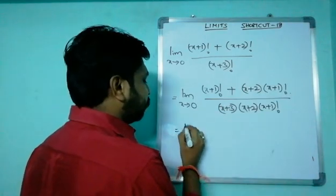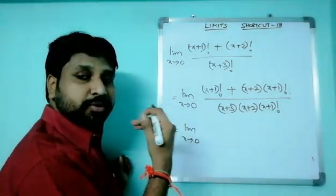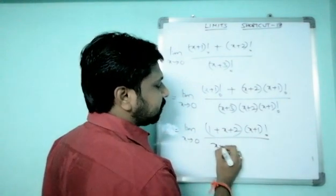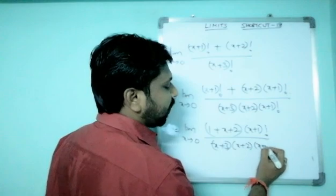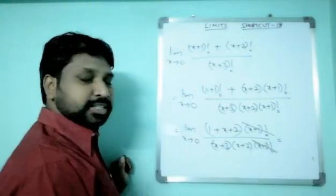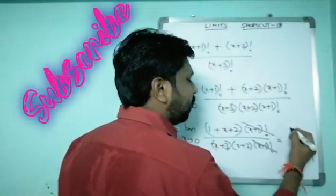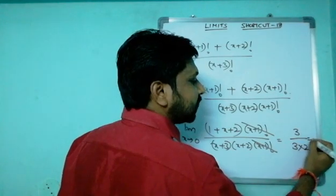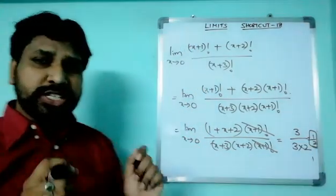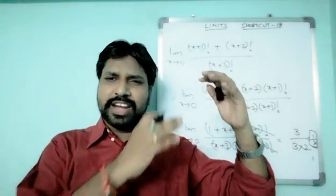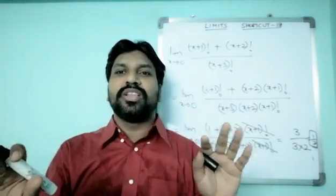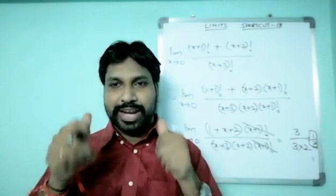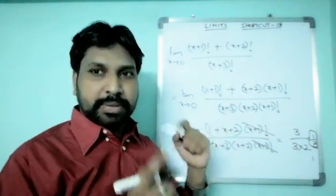Take (x+1)! common in numerator and denominator and cancel it. You get [1 + (x+2)] / [(x+3)(x+2)]. Now substitute x=0: numerator = 1 + 2 = 3, denominator = 3 × 2 = 6. So the answer is 3/6 = 1/2. The logic is: convert highest factorial to least, take common, cancel, then substitute the limit value.